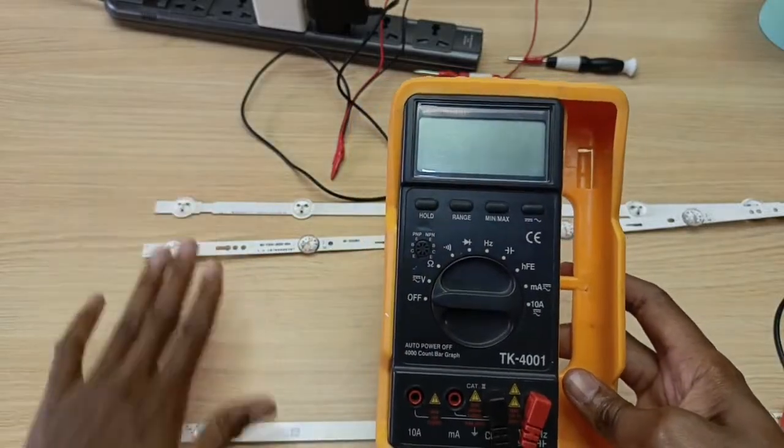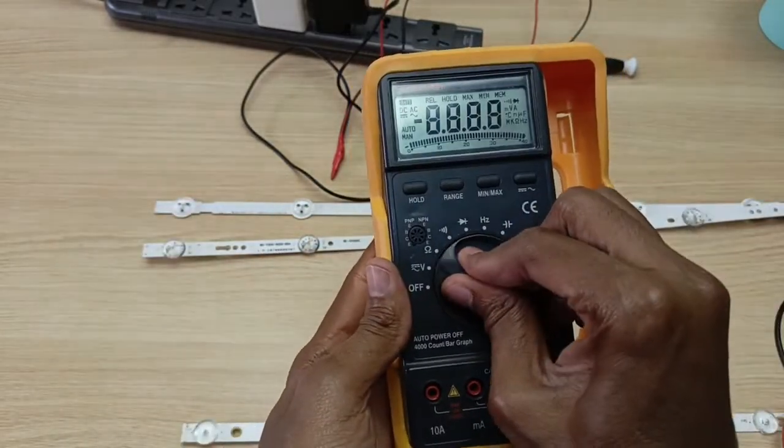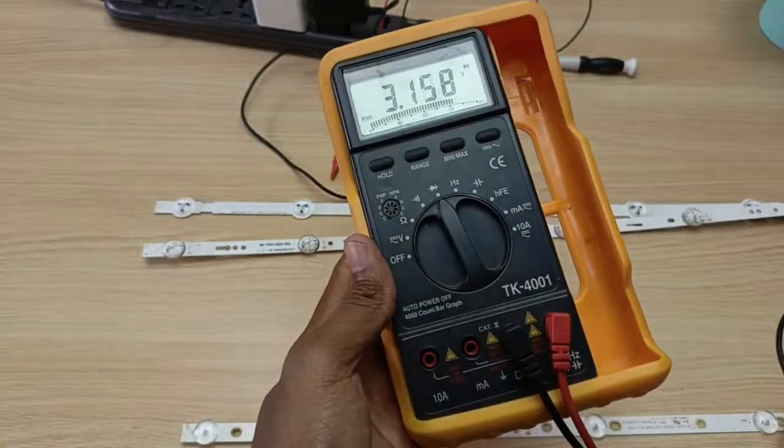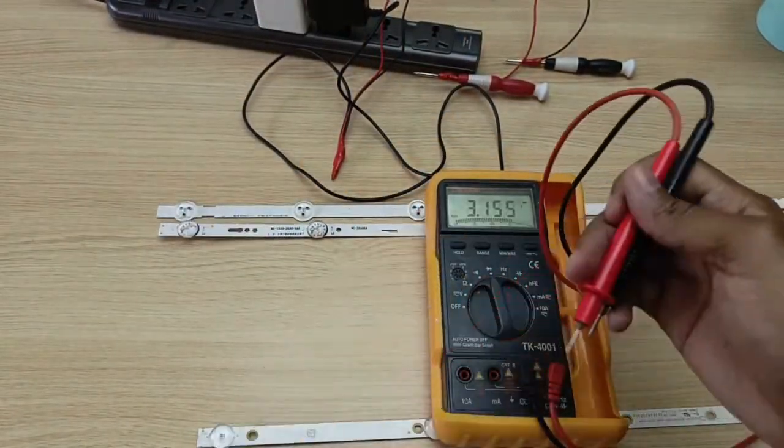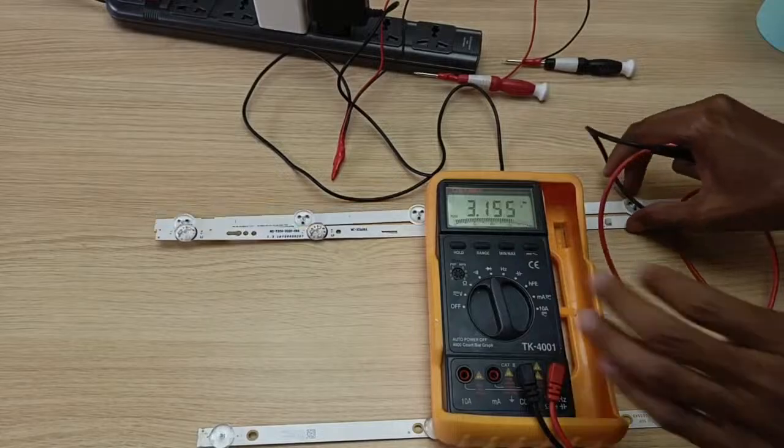Since all LEDs are diodes, we use the diode mode on our multimeter and I will demonstrate how I use it to test these two backlights.